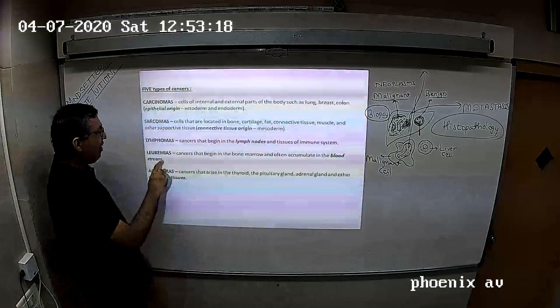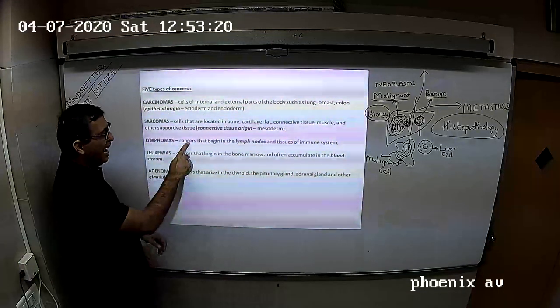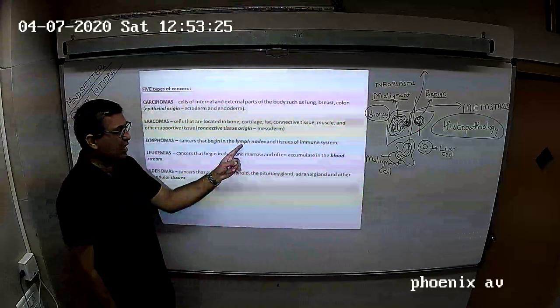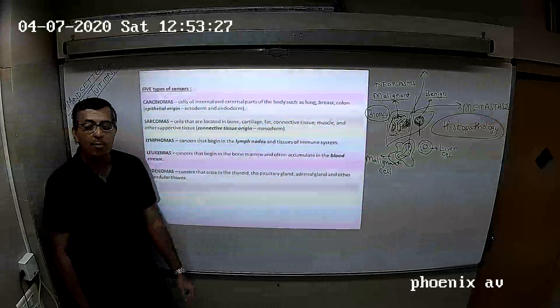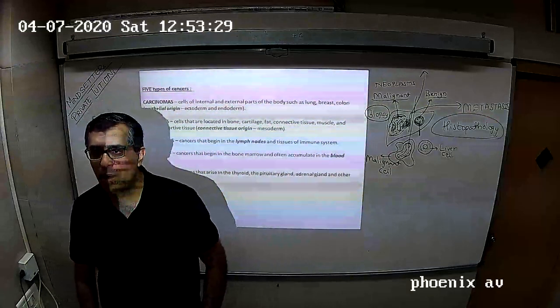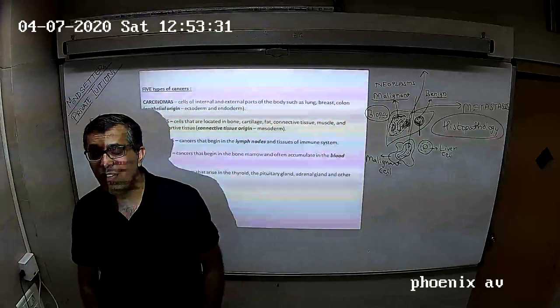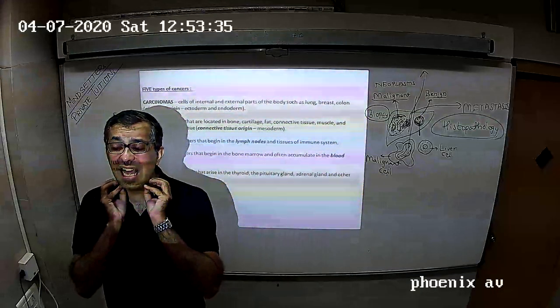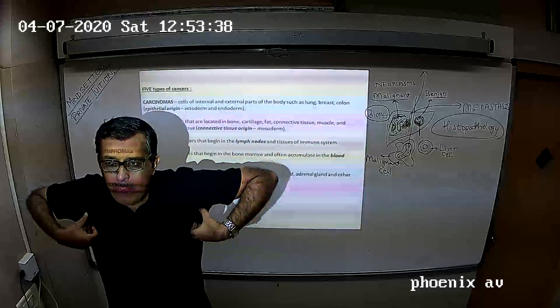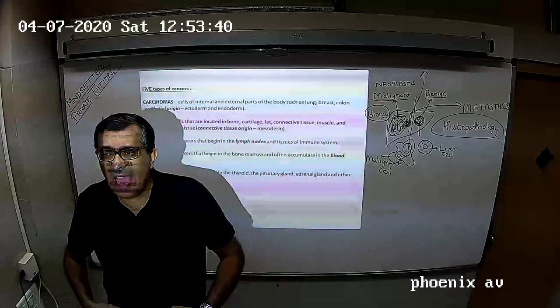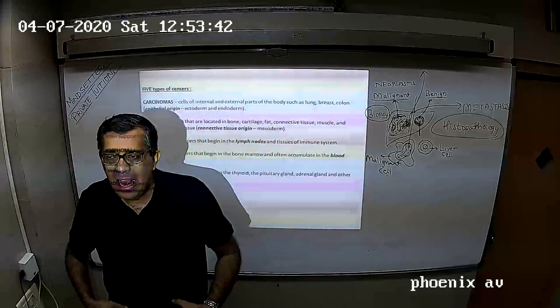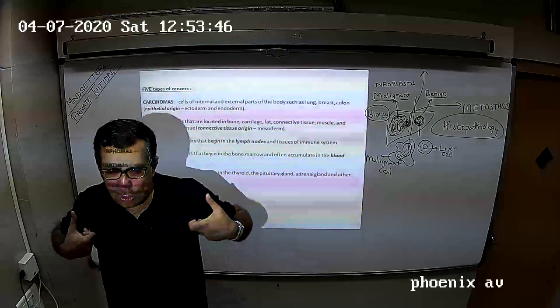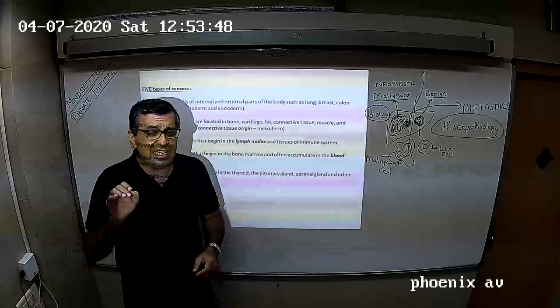And then we have lymphomas. Cancers that begin in lymph nodes and tissues of immune system are called as lymphomas. A person with cancers of his lymph nodes: some lymph nodes in the neck region swell, or in the armpit lymph nodes swell, or in the abdomen lymph nodes swell. They are swollen. You palpate them. You can touch these lymph nodes and feel these lymph nodes. Then they are called as lymphomas.